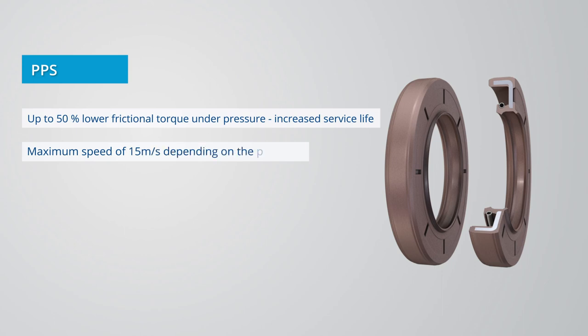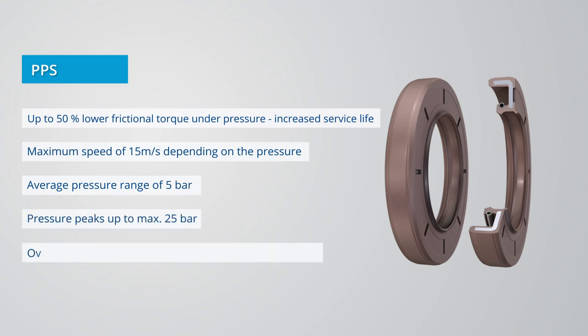Maximum speed of 15 meters per second, depending on the pressure. Average pressure range of 5 bar. Pressure peaks up to max 25 bar possible. Over 50 dimensions in FKM material available from stock.